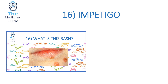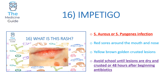Rash 16 is impetigo, caused by either Staphylococcus aureus or Streptococcus pyogenes infection. Children typically present with red sores around the mouth and nose, followed by yellow-brown golden crusted lesions. Exams may describe these as honey-coloured crusted lesions. Regarding school exclusion: children with impetigo need to avoid school until all lesions are dry and crusted, or 48 hours after beginning antibiotics.